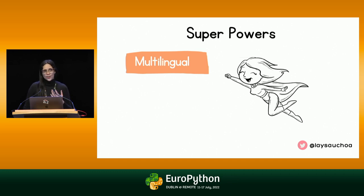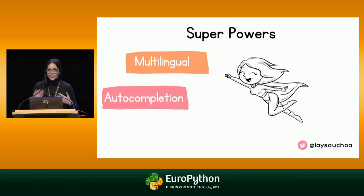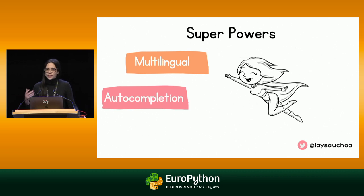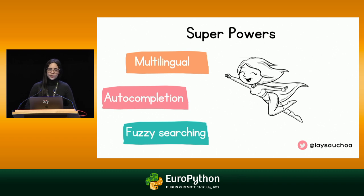I also think that if OpenSearch were a hero, it would be able to read your mind, because you can implement auto-completion. This is something you may have seen in search engines — you start typing something and it tells you what you might be looking for based on relevance or information about you. You can also do this with OpenSearch. And can OpenSearch understand your broken English? The answer is yes, because you have fuzzy searching. Even if you mistype something or make small mistakes, OpenSearch will still bring you results.